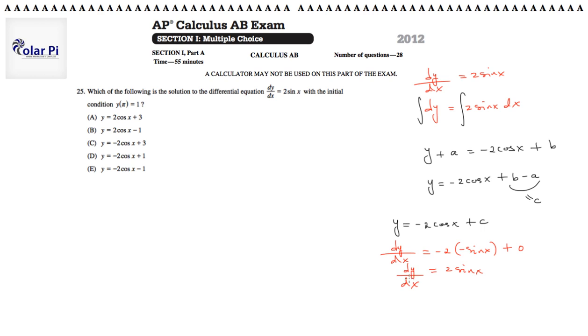But we're not after a general solution. We're after a particular solution. So taking this general solution, we should use the initial condition that we're given to find a particular solution. The particular solution is of a family of infinitely many functions that have that form. The one function that goes through the point pi, 1 is the one we're after.